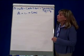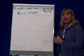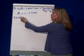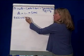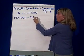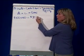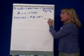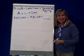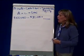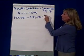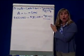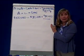For example, if I have assets of $100,000 and my liabilities are $80,000, can you tell me what stockholders' equity has to be? Well, it's $20,000, isn't it? Because the accounting equation always has to stay in balance.